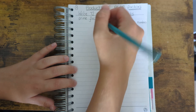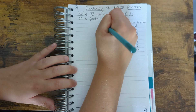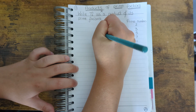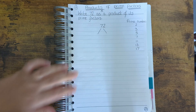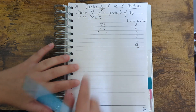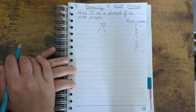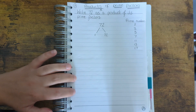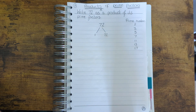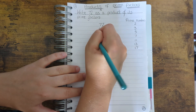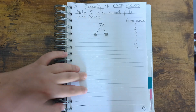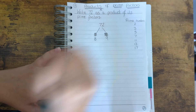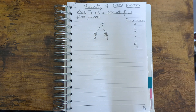For this first example, we need to find the prime numbers that multiply to make 72. I start by writing 72 and drawing two lines — I'm going to call these legs for the rest of the questions. Now I need to think of two numbers that multiply together to make 72. There's no point in choosing 1 and 72 because you just end up with the same number you started with. So instead I'm going to choose 8 and 9, though you could choose 6 and 12 or 2 and 36.